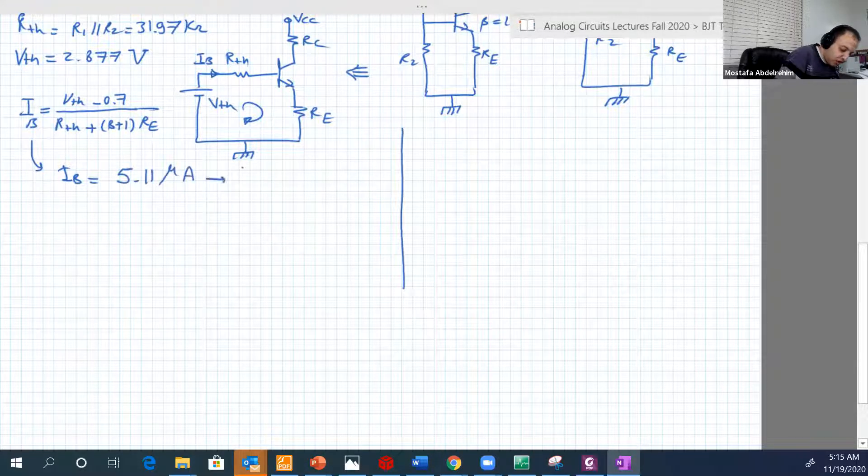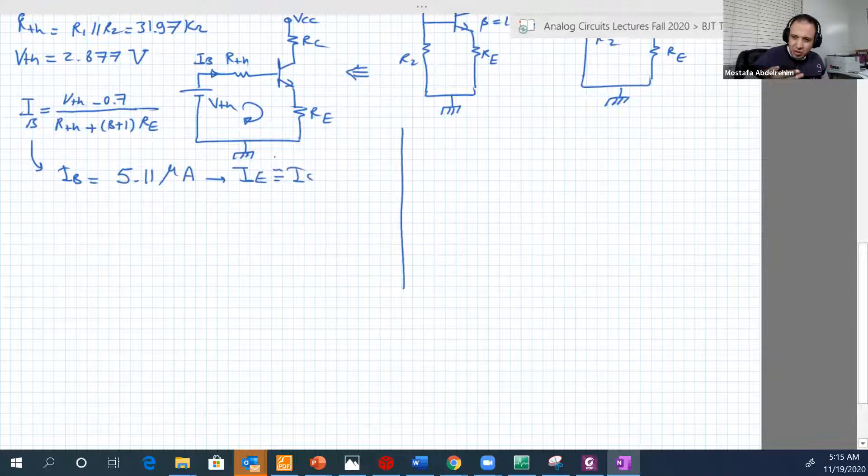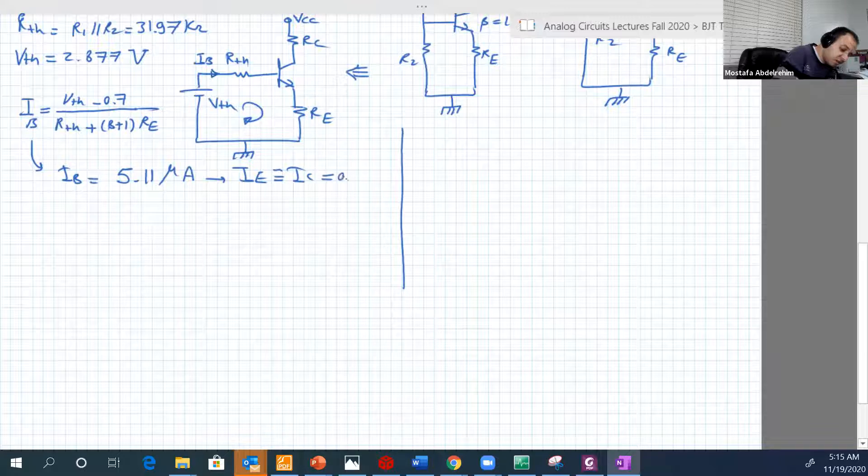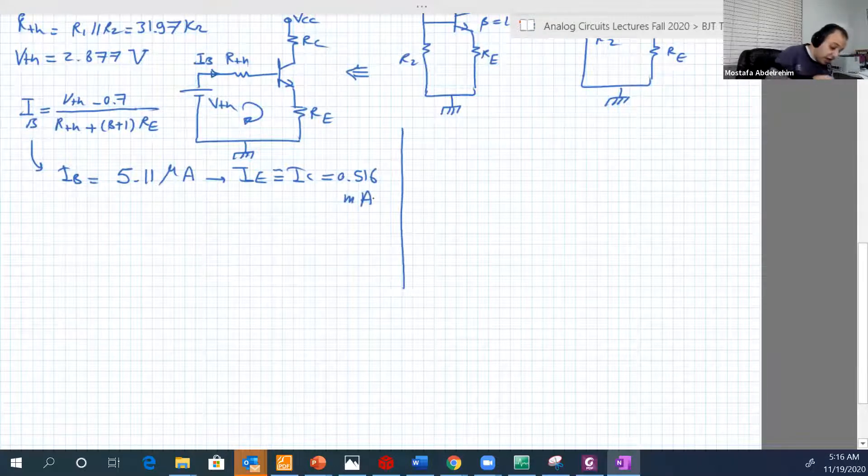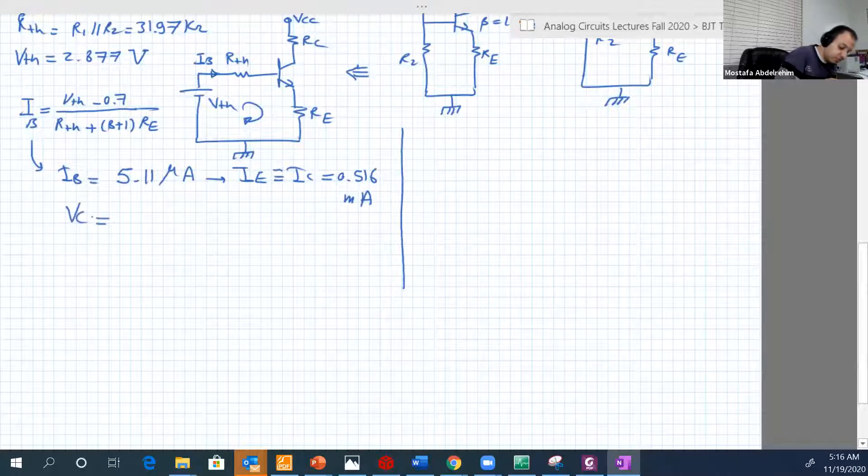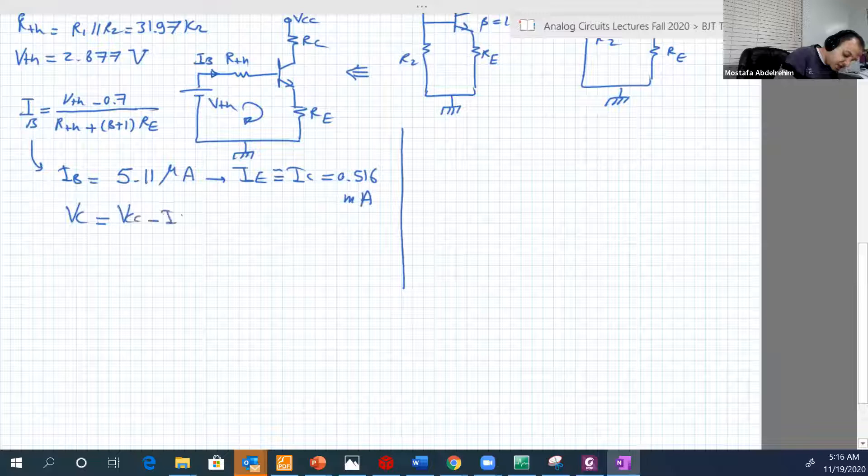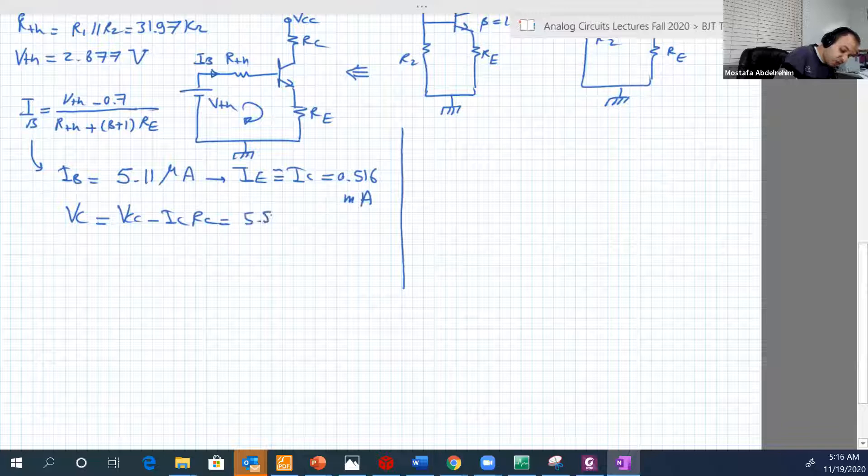Then of course, IE or IC, because again IE usually equal to IC, just forget in active region, equal to beta IB. So it will be 0.516 milliamperes. And we can determine VC, of course, to be sure we are in the active region, VCC minus IC RC, and it will be 5.52.